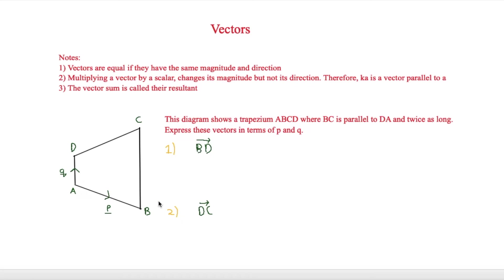The first thing is to look at how we use vectors to describe a line. This diagram shows a trapezium ABCD, where BC is parallel to DA and twice as long. So we can deduce that BC is going to be 2q. To express vectors in terms of p and q, the first one is BD. To get from B to D, that's going to be minus p — because we're going in the opposite direction — plus q.